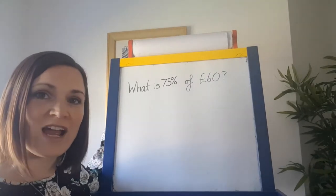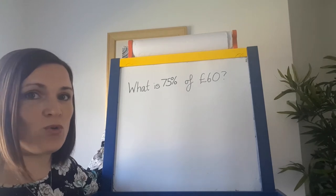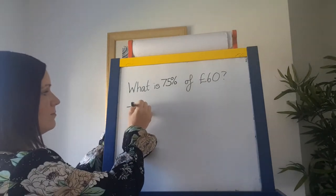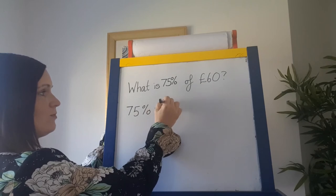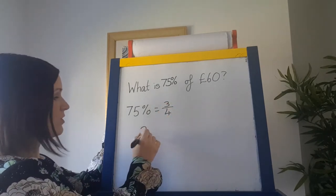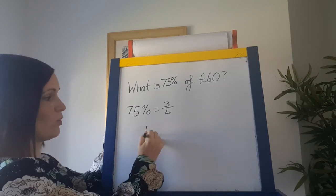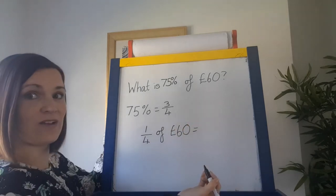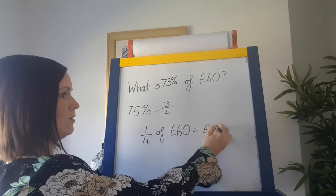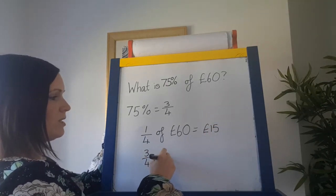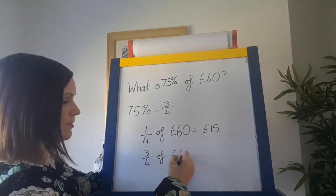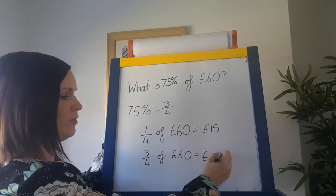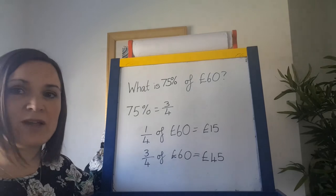All the examples so far have been unit fractions, where the numerator has always been 1. But this percentage is not going to be a 1. 75% is equal to 3 quarters. If you're finding 3 quarters of something, the first thing you do is find 1 quarter. One quarter of £60, halving and halving again, is £15. Then for 3 quarters, you multiply that answer by 3: 15, 30, 45. So 75% of £60 is £45.